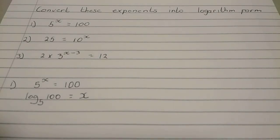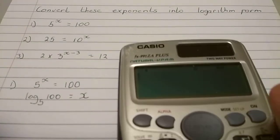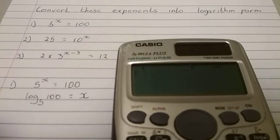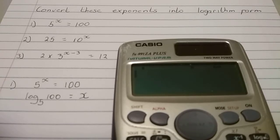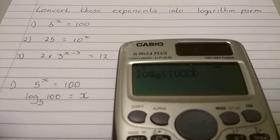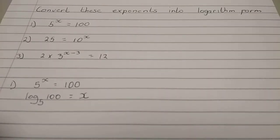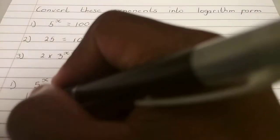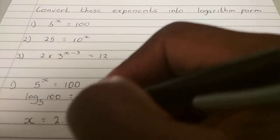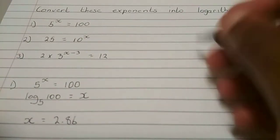From there, it's just a simple use of a calculator. So we're going to say log 5, a base of 5. And over there we have 100. And then you get that your final answer, your x is 2.86. We'll leave it at two decimal places.